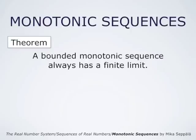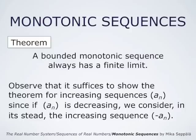To prove this result that a bounded monotonic sequence always has a finite limit, observe first that it suffices to show that the theorem is true for increasing sequences AN. Namely, if the sequence AN is monotonic and not increasing, then it is decreasing. And if the sequence AN is decreasing, we consider instead the increasing sequence consisting of numbers negative AN. Now, if the sequence AN is bounded, then also the numbers negative AN are bounded, and the sequence of negative AN is increasing if AN is decreasing. Therefore, if we can show that negative AN has a limit as N goes to infinity, also AN has a limit. So we consider only increasing sequences AN.